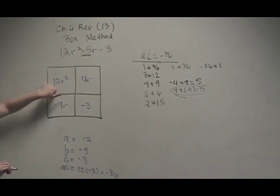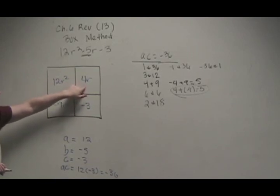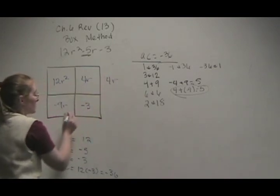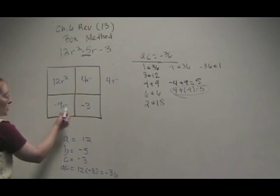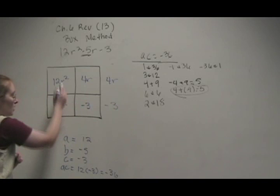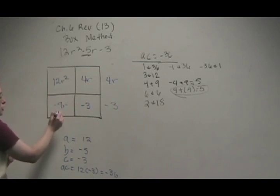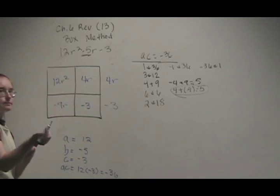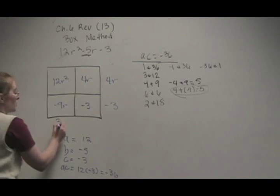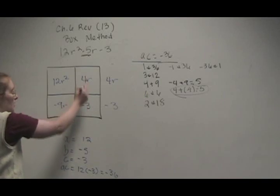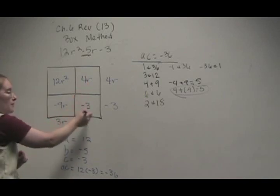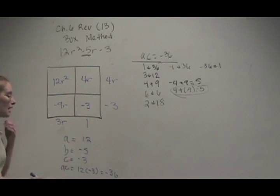So if we look at 12R squared and 4R, what are the common terms? You can see we can pull a 4R out of both of them. Here, negative 9R, negative 3. We can pull a negative 3 out of both of them. Going down this way, 12 and 9. Let's see here. What can we take out? We can't take the full 9, but we can take a 3 out of both. And we can also take an R. Here, you can see 3 and 4, we can't take anything. We don't have a matching R, so this is just a 1.